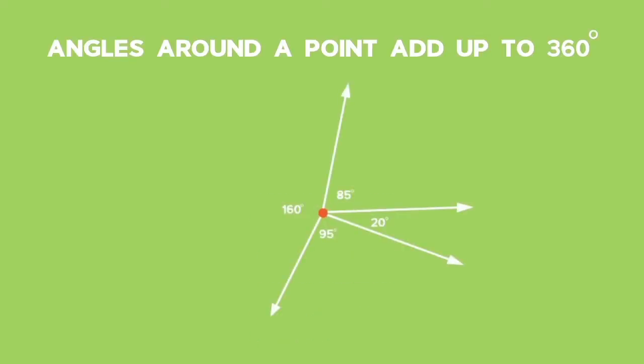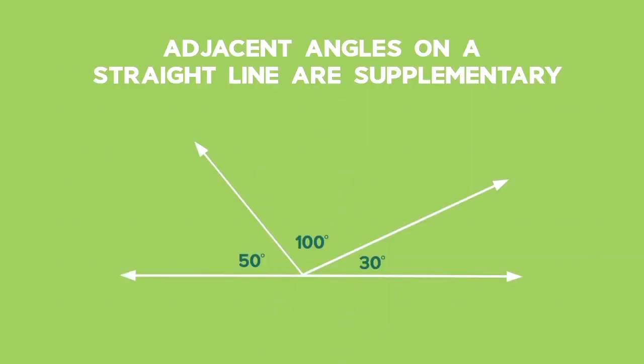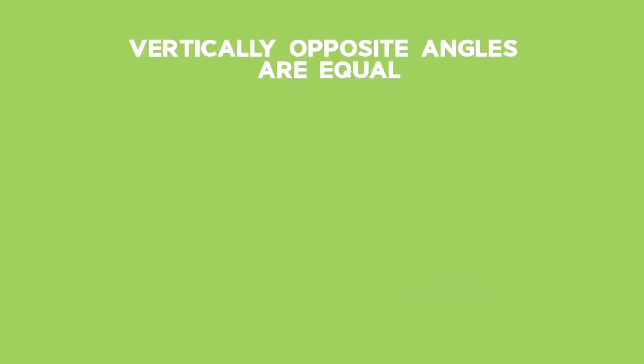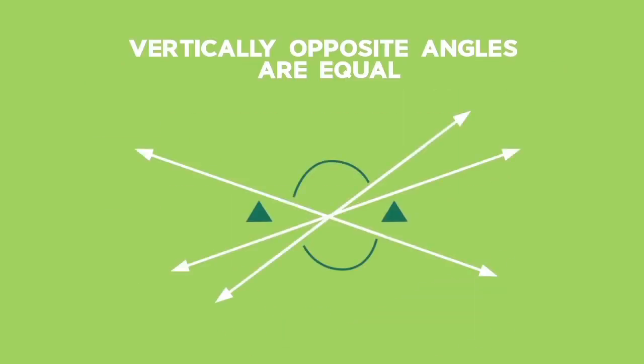Angles. Angles around a point add up to 360 degrees. Adjacent angles on a straight line are supplementary. Vertically opposite angles are equal.